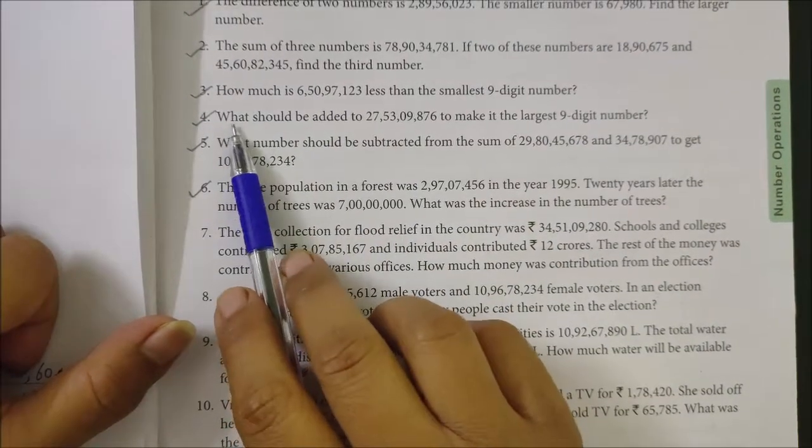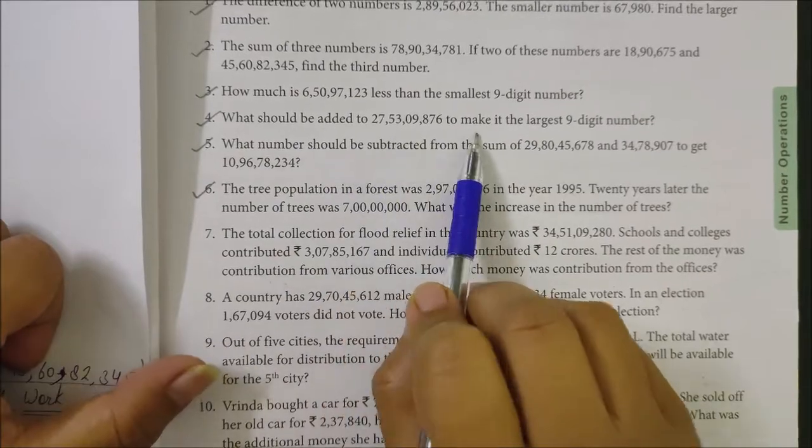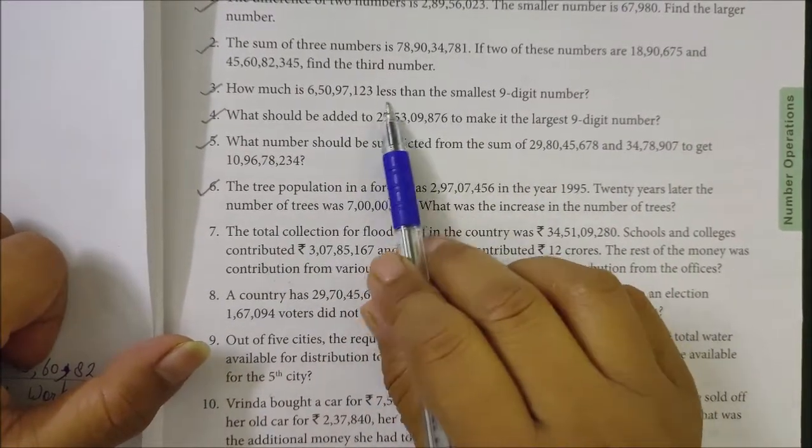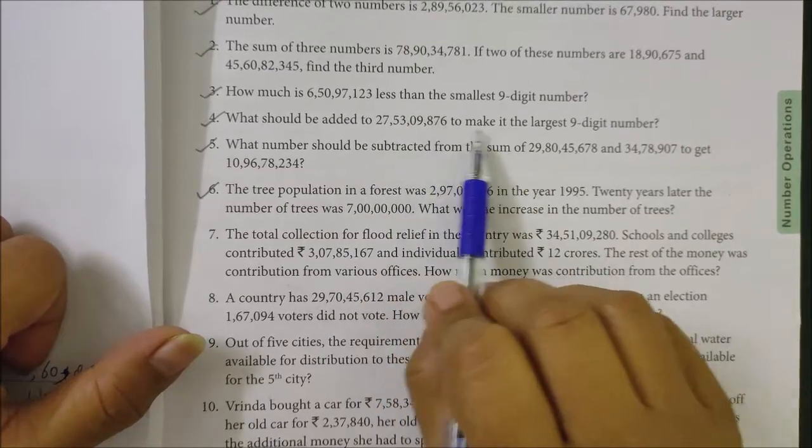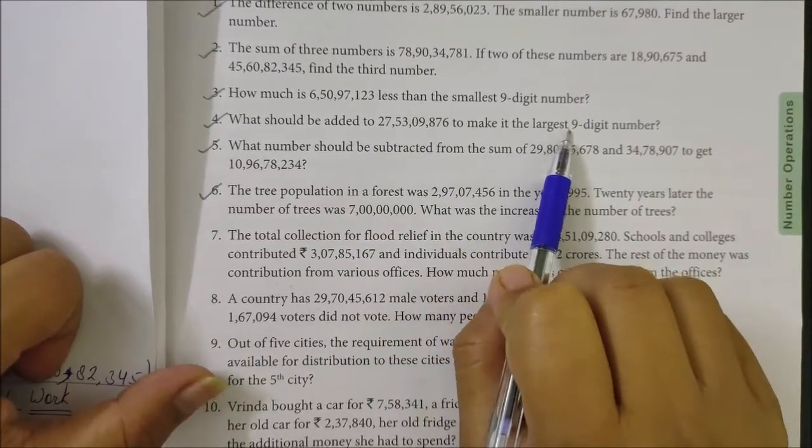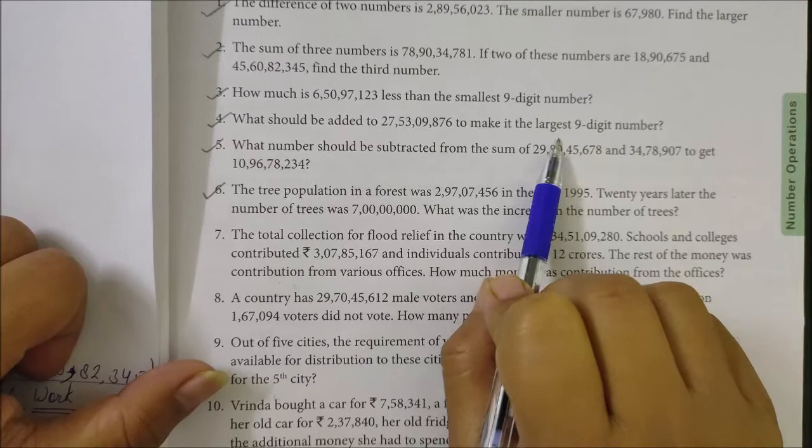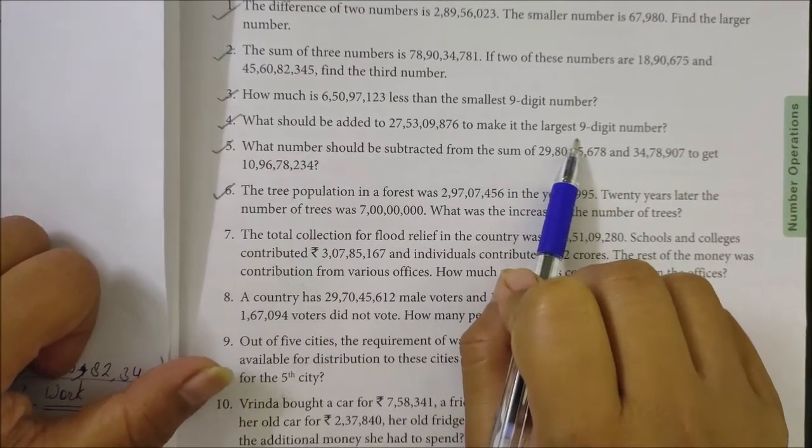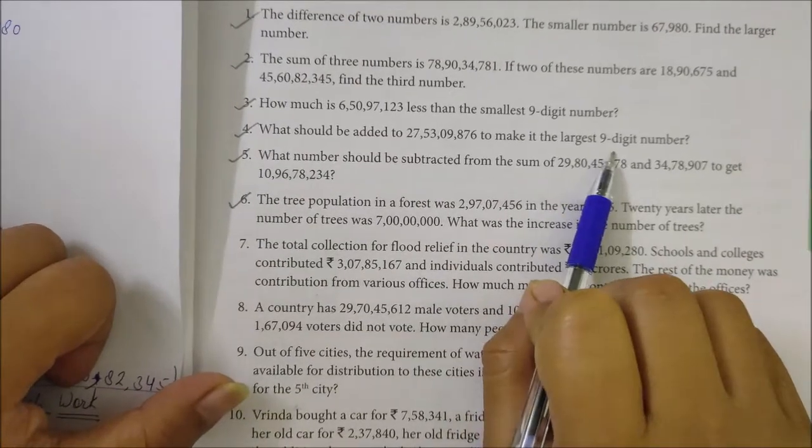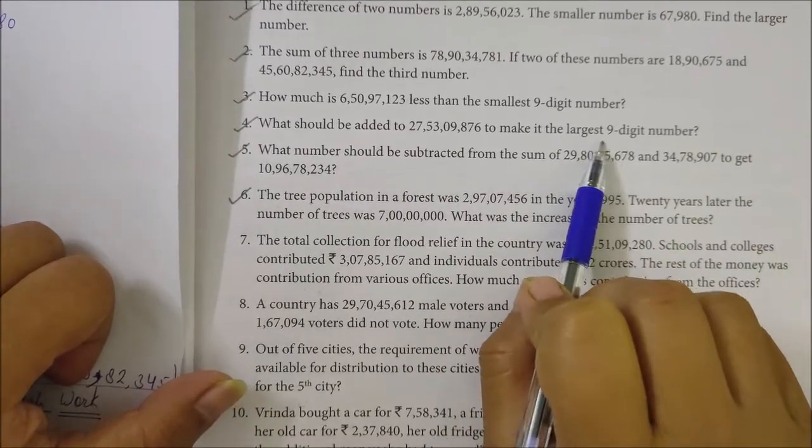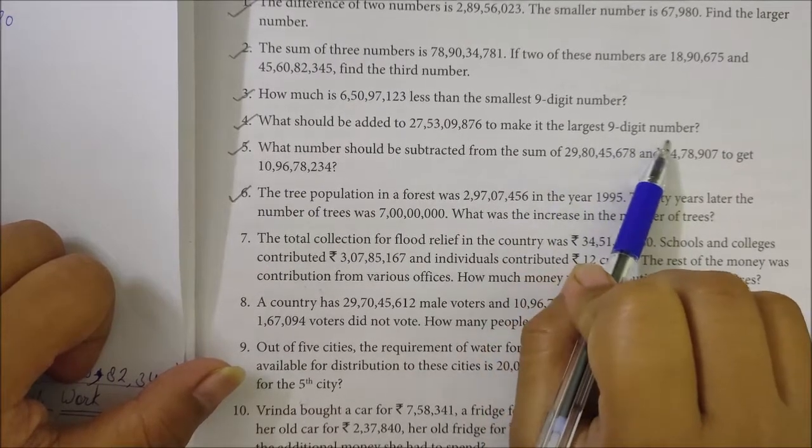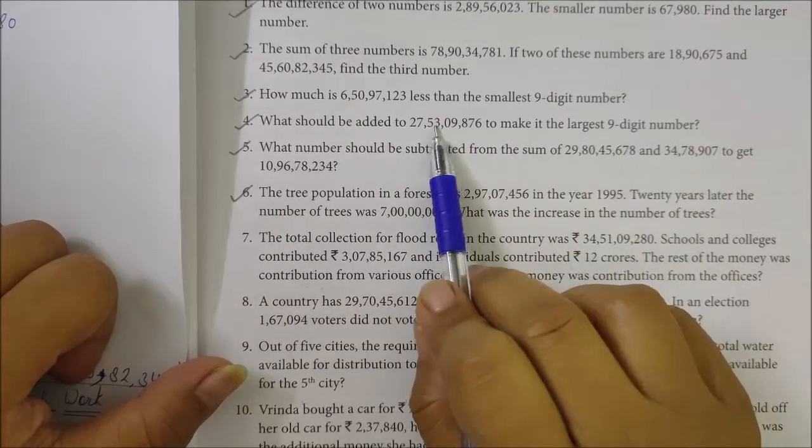Question number 4: What should be added to make it the largest 9-digit number? First, you will write the largest 9-digit number. The largest 9-digit number starts with 9 and we repeat 9 nine times: 99,99,99,999. Then minus the given number and you will get the answer.